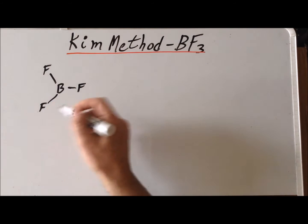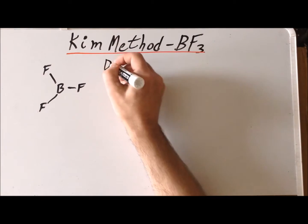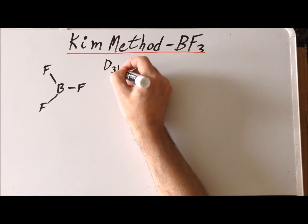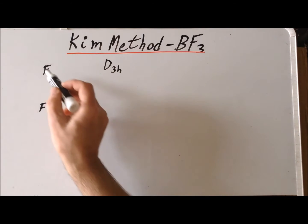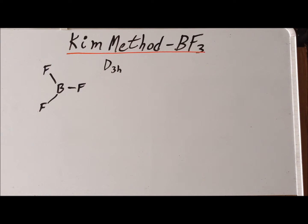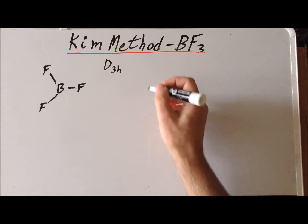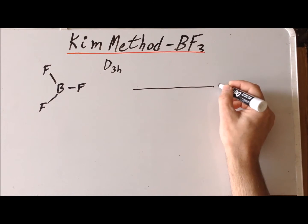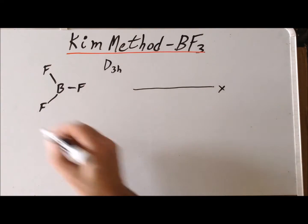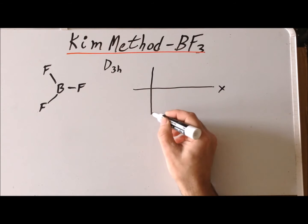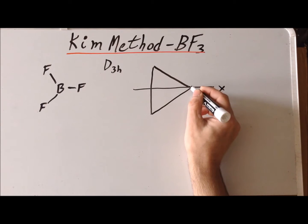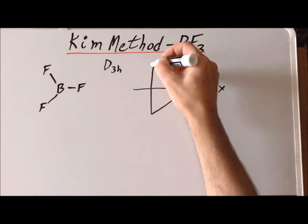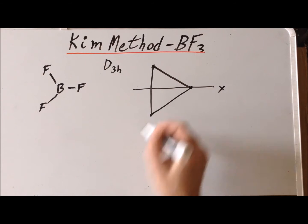We recognize that this molecule belongs to the point group D3H. Within the Kim method, the first step is to find coordinates for each of the symmetry equivalent atoms, which here are the three fluorine atoms. We will allow this to be the x-axis, and this makes an equilateral triangle so we can plot out the general shape of our compound. And then we'll have coordinates for the fluorine atom there, there, and there.